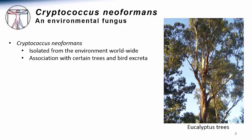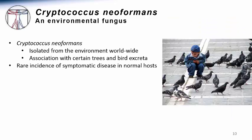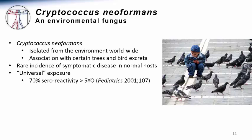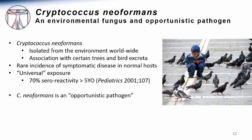Environmental sampling studies have demonstrated that the etiologic agent of this infection, Cryptococcus neoformans, is a yeast that can be found worldwide. It is often associated with trees such as the eucalyptus tree shown on the right of this slide. The organism can also be cultured from bird excreta, especially from pigeons. So why does an infectious agent found so frequently throughout the world, and so frequently in association with human environments, not cause disease more frequently?